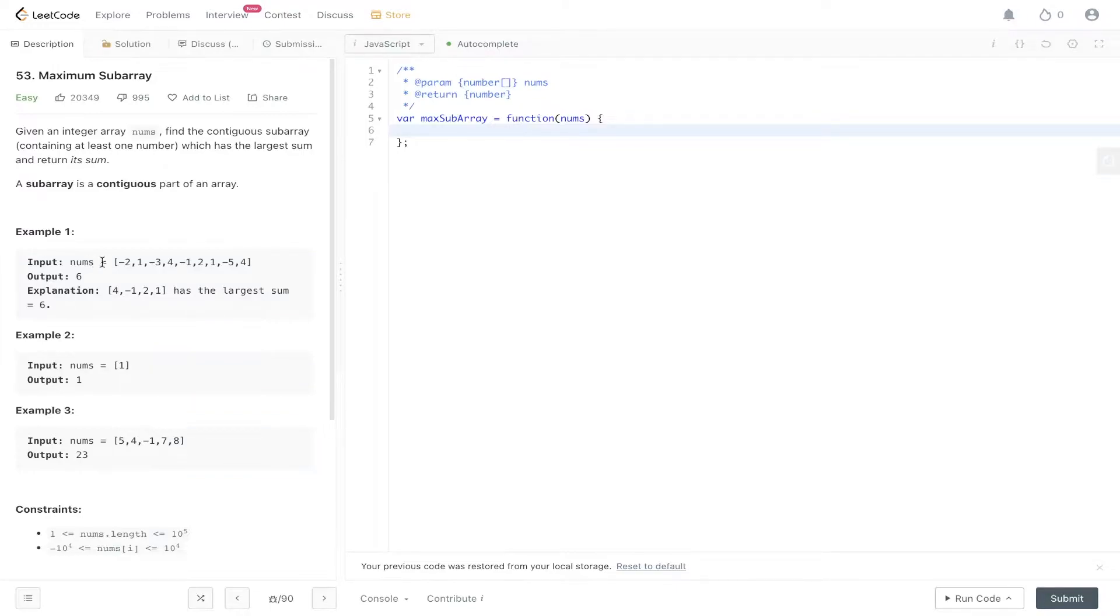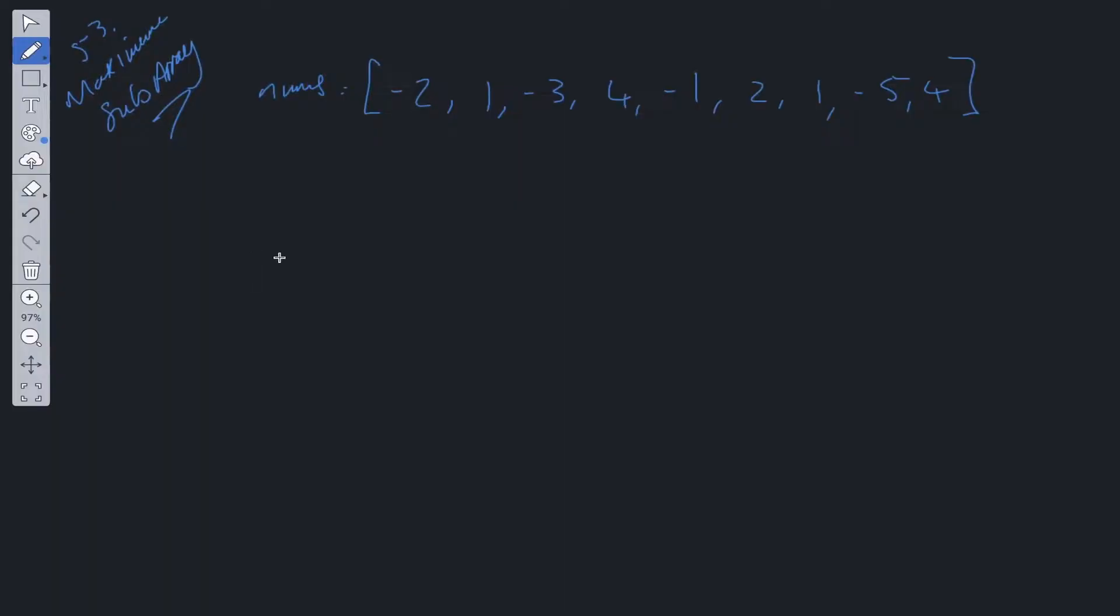In the example here we have a nums array, which is just an array full of integers, and our output is 6 because we have a subarray here which equals 6. So that's the maximum subarray within this nums array. Contiguous here just means that these numbers follow one after the other. So let's work out a way to solve this.